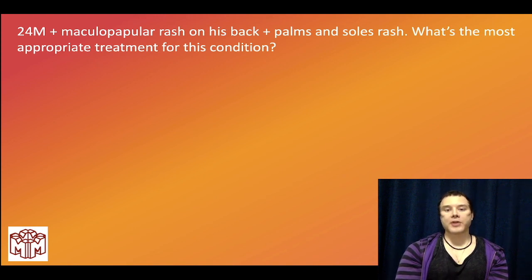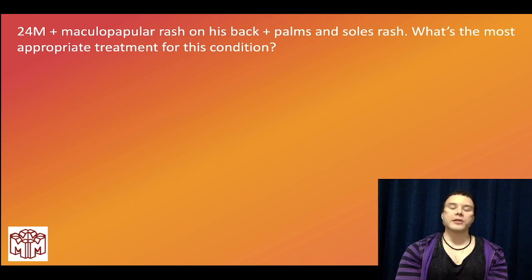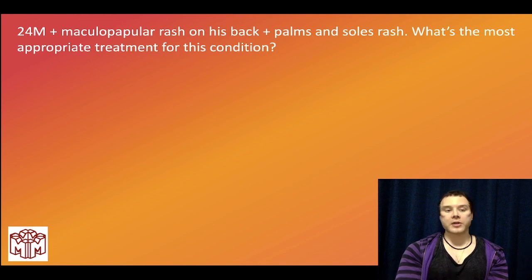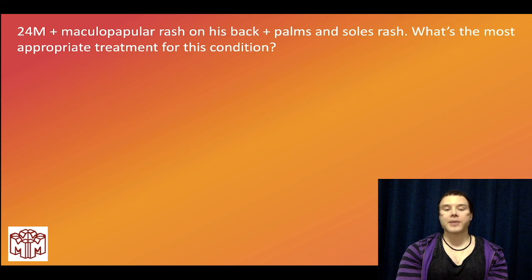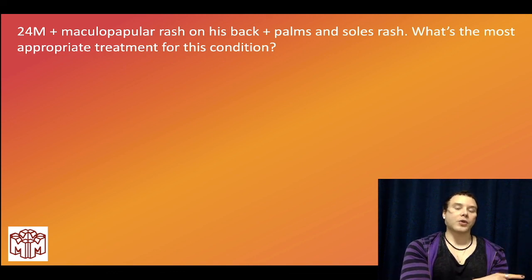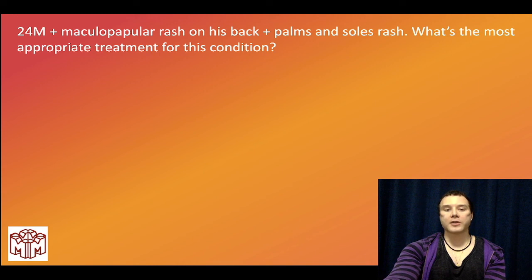24-year-old male with maculopapular rash on his back plus palms and soles — most appropriate treatment? This is secondary syphilis; we treat with penicillin. If there's history of anaphylaxis to penicillin, we desensitize and give penicillin. USMLE can show you a male with a maculopapular rash, intercourse without condom use, antifungals not effective or KOH prep negative — next best step in diagnosis is VDRL or RPR. Fluorescent treponemal antibody is confirmatory. VDRL test uses charcoal particles.